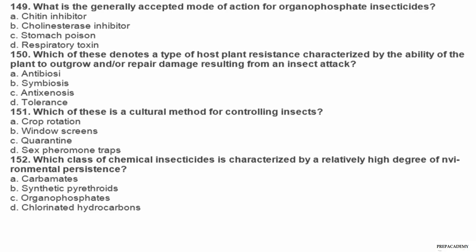Question 149. What is the generally accepted mode of action for organophosphate insecticides? Question 150. Which of these denotes a type of host plant resistance characterized by the ability of the plant to outgrow and/or repair damage resulting from an insect attack? A antibiosis, B symbiosis, C antixenosis, D tolerance. Question 151. Which of these is a cultural method for controlling insects? A crop rotation, B window screens, C quarantine, D sex pheromone traps.